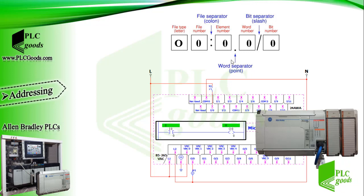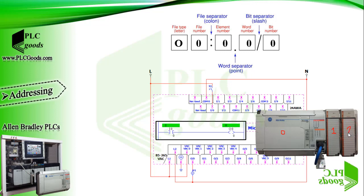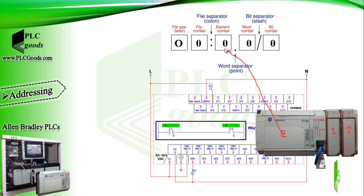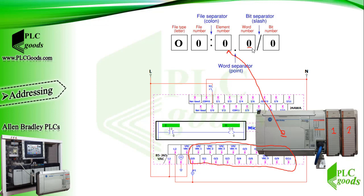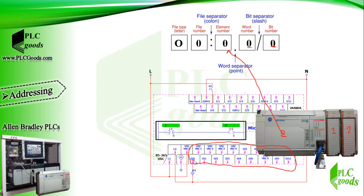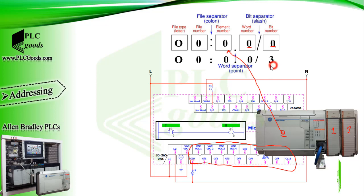The letter O indicates the address is for a PLC output. The file number is 0 and can be omitted. The colon is a separator. The next number indicates the element or slot number holding the actual output, which can range from slot 0 to a maximum of 30. My system has three modules with slot numbers 0, 1, and 2. The next number indicates the word number — a word has 16 bits, and my CPU has 12 digital outputs so one word stores all output statuses. After the forward slash, the bit number or terminal number is determined. In Micrologix 1500 with 12 output terminals, 0 means terminal O0 and 3 refers to terminal O3.